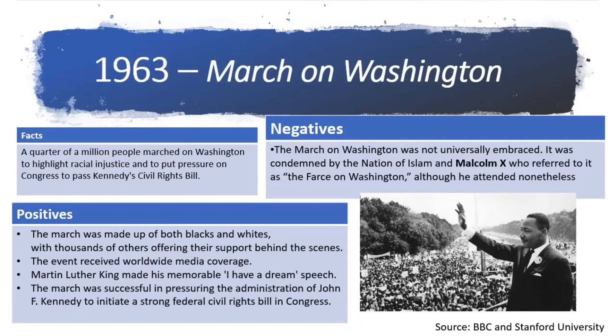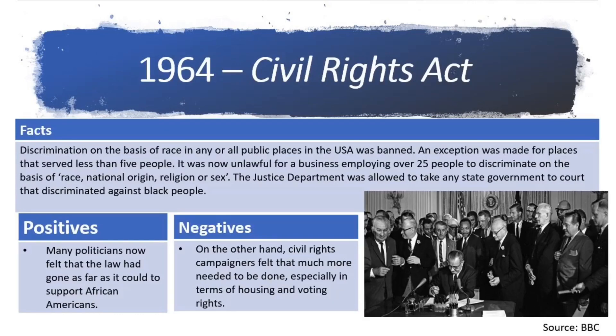The March on Washington in 1963 is one of the most famous events of the Civil Rights Movement, partly due to its size as a quarter of a million people took part, but also because of Martin Luther King's memorable 'I Have a Dream' speech. Though there were some critics, such as Malcolm X, many believe it put significant pressure on JFK and a new Civil Rights Act followed shortly after. The Civil Rights Act of 1964 said that discrimination on the basis of race in any or all public places in the USA was banned. This was great progress and many politicians now felt that the law had gone as far as it could.